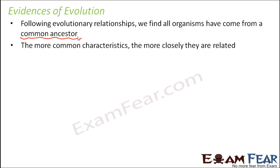When we say more common characteristics, we are actually talking about similarities. The more similar two organisms are, the more closely related they are. Let us take the example of human beings. Suppose this is a couple and these are their kids. These two kids look so similar — there are little differences like hair color and skin complexion, but otherwise they share a lot of similarities, because they are brothers with the same parents.